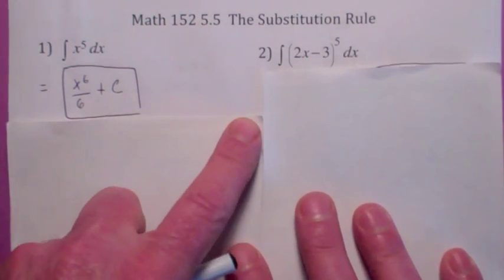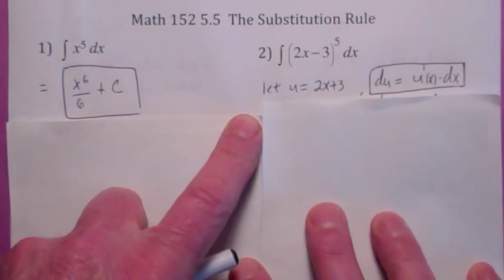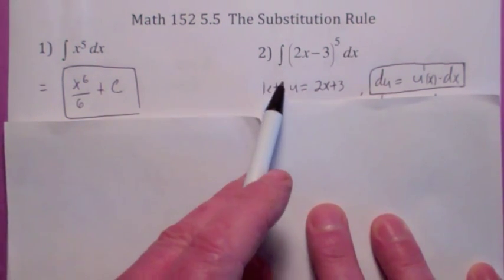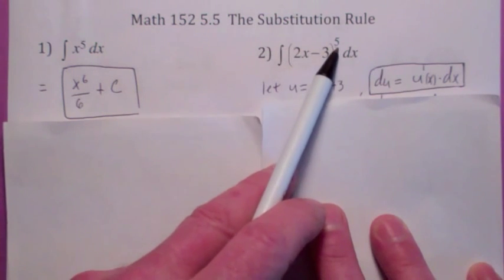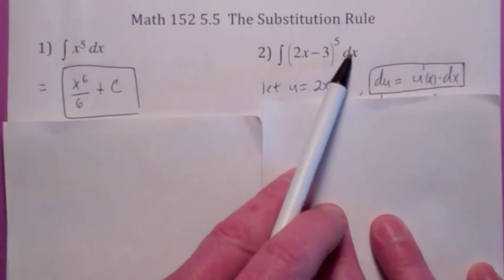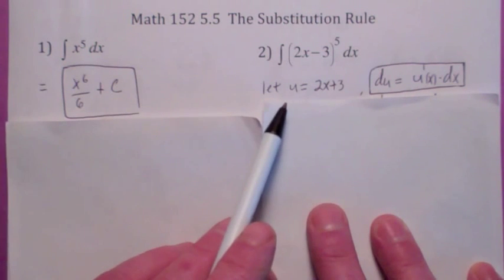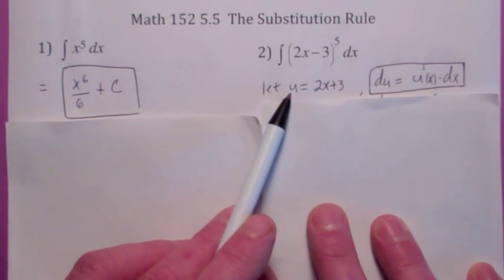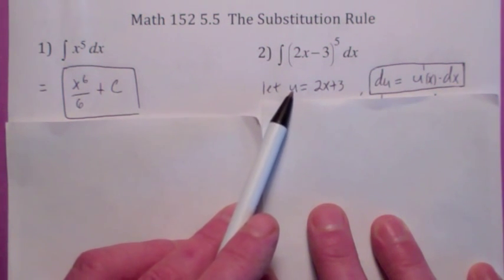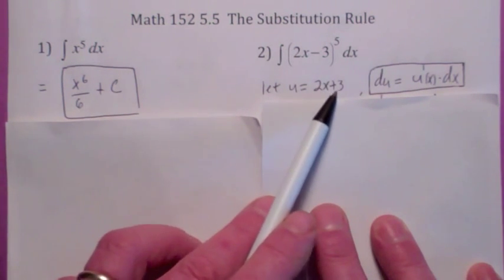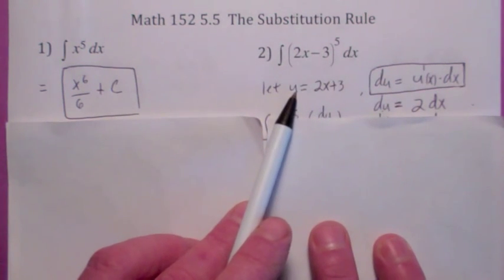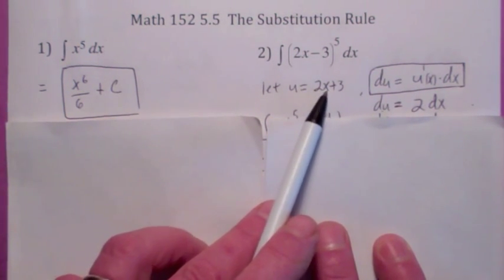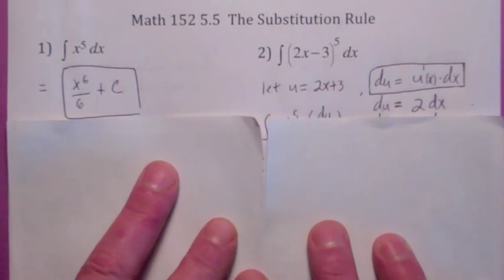So what we do is we make a substitution. We let u — we usually use u — equal this thing, 2x minus 3. Then we'll have u to the fifth. But you have to make a substitution for all of it, including the differential dx. The definition of a differential — you might want to go back to section 3.10 — the differential of u is equal to u prime of x times the differential of x. So du is equal to the derivative of u with respect to x, which is 2, times dx.